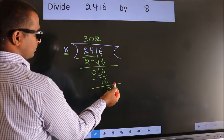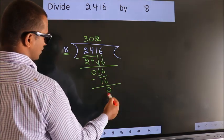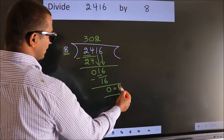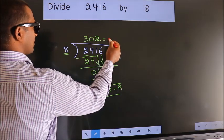No more numbers to bring down, so we stop here. This is our remainder. This is our quotient.